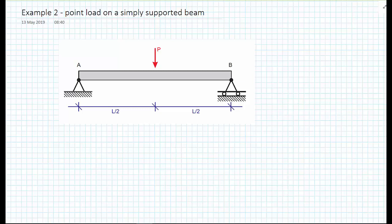In this video, we're going to use the double integration method to calculate the deflection when we have a point load on a simply supported beam. This is quite often the first example we do for most of our problems. However, we encounter a problem here where we're going to have two bending moment equations, based on whether we're from A at the left hand side of the beam up until the point load in the middle, or whether we're going from the middle of the beam, so L upon 2, all the way to L. So we'll end up with two bending moment functions.